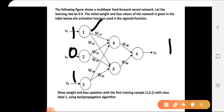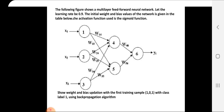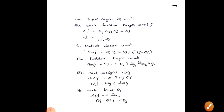We need to find the output values for units in the input layer, hidden layer, and output layer. The input values are given for the input layer, the hidden layer receives its input from the previous layer, and the output layer receives its input from the hidden layer.